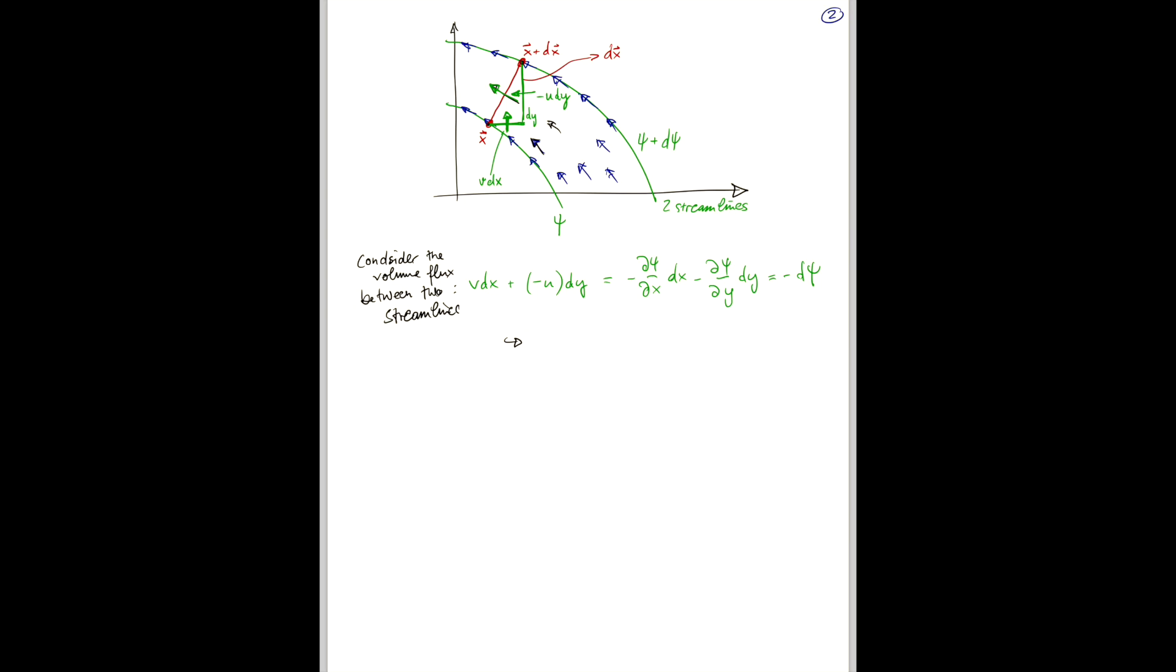And so, that means that the volume flow rate between these lines here is always the same. And when the lines are further apart, then the flow is slower, because this distance here is wider. And when they're closer together, then the flow has to speed up, because the distance is more narrow.